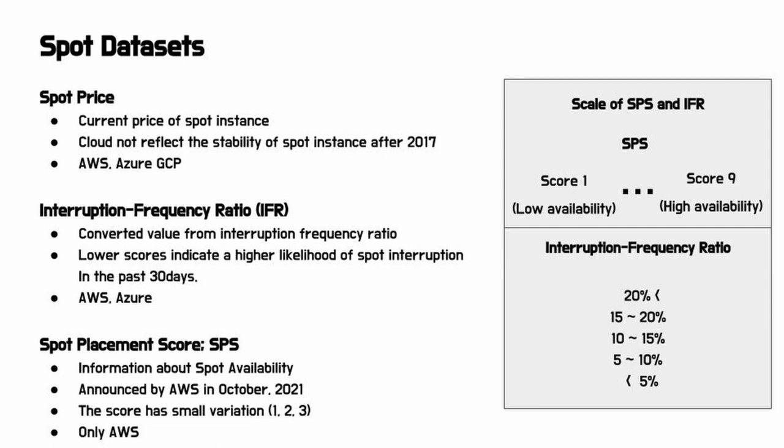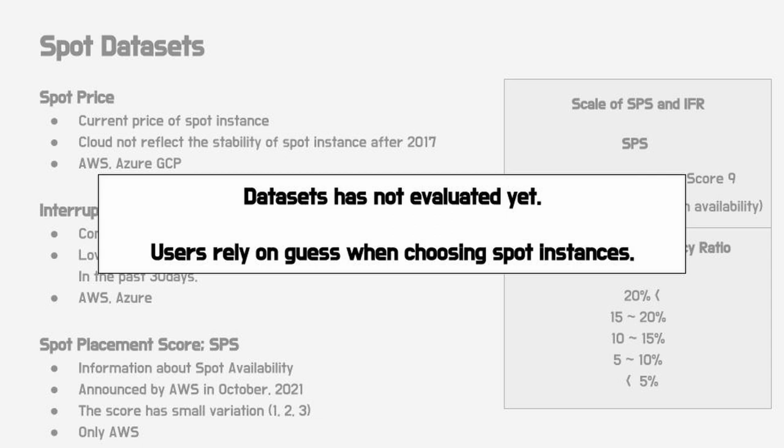Spot price provides timely price information. Interruption frequency ratio shows the ratio of Spot interruptions in the past 30 days, and Spot placement score indicates current availability of Spot instances. However, this dataset has not been evaluated yet, and many users still rely on guessing when choosing a Spot instance.